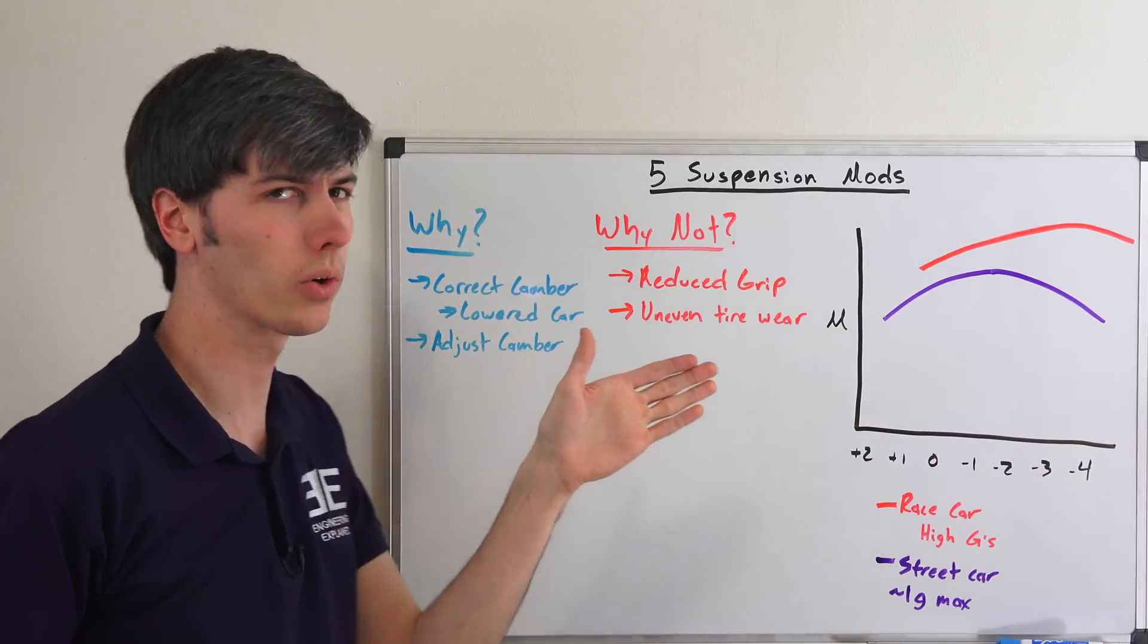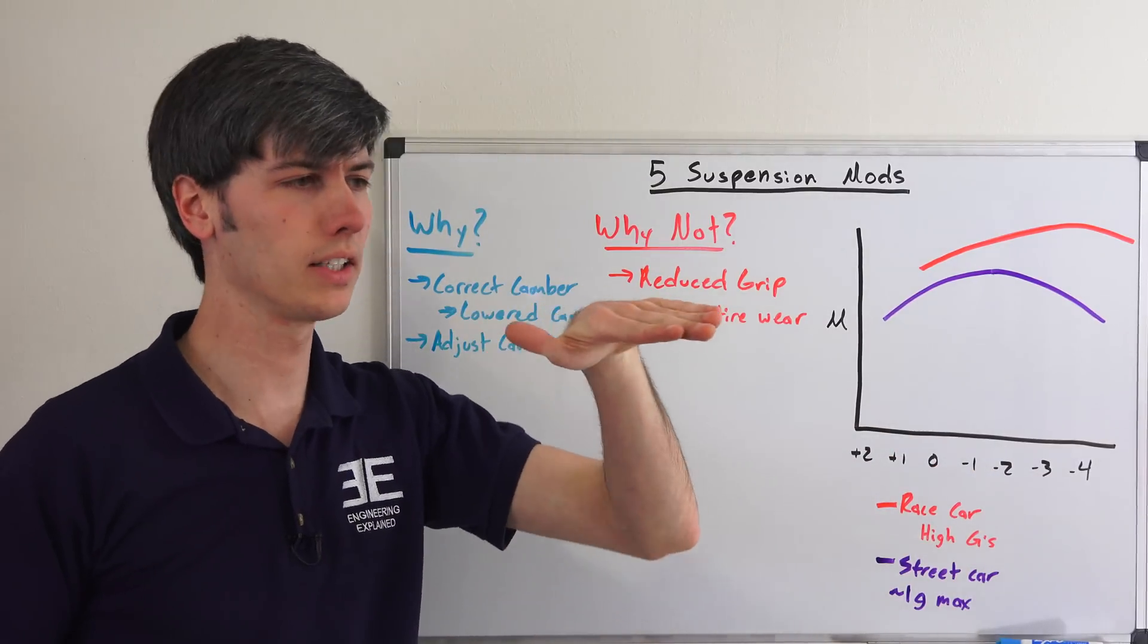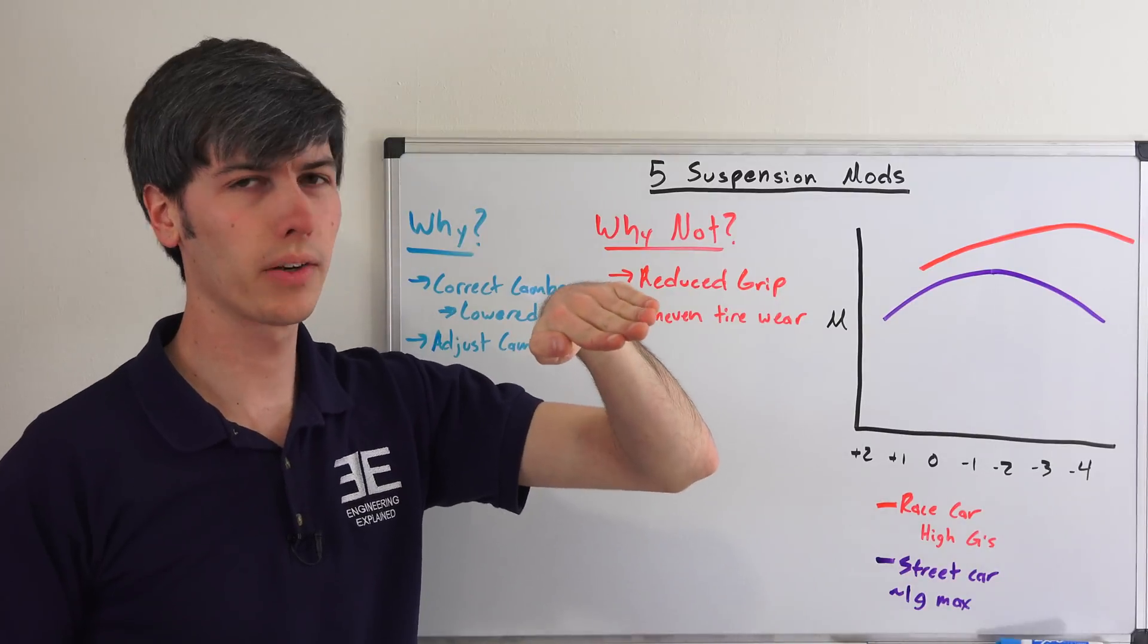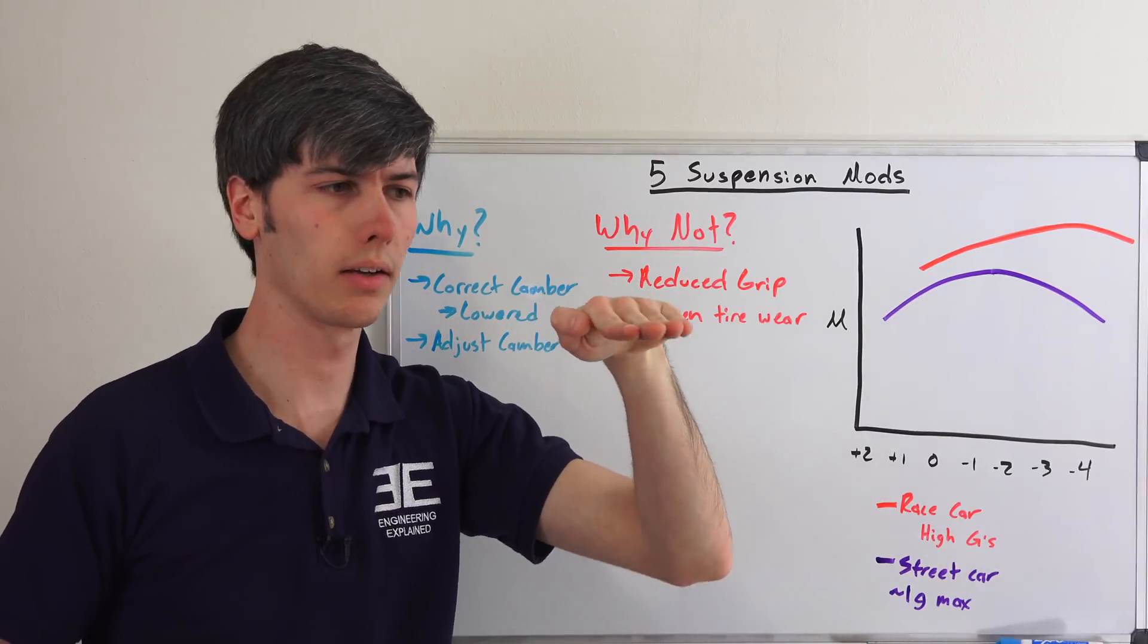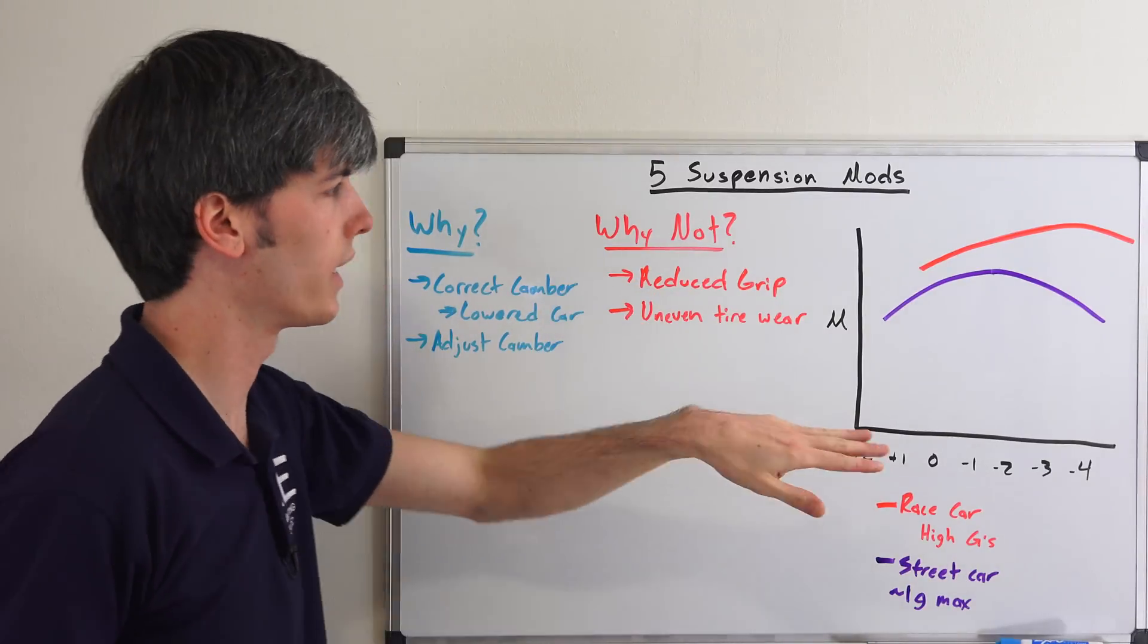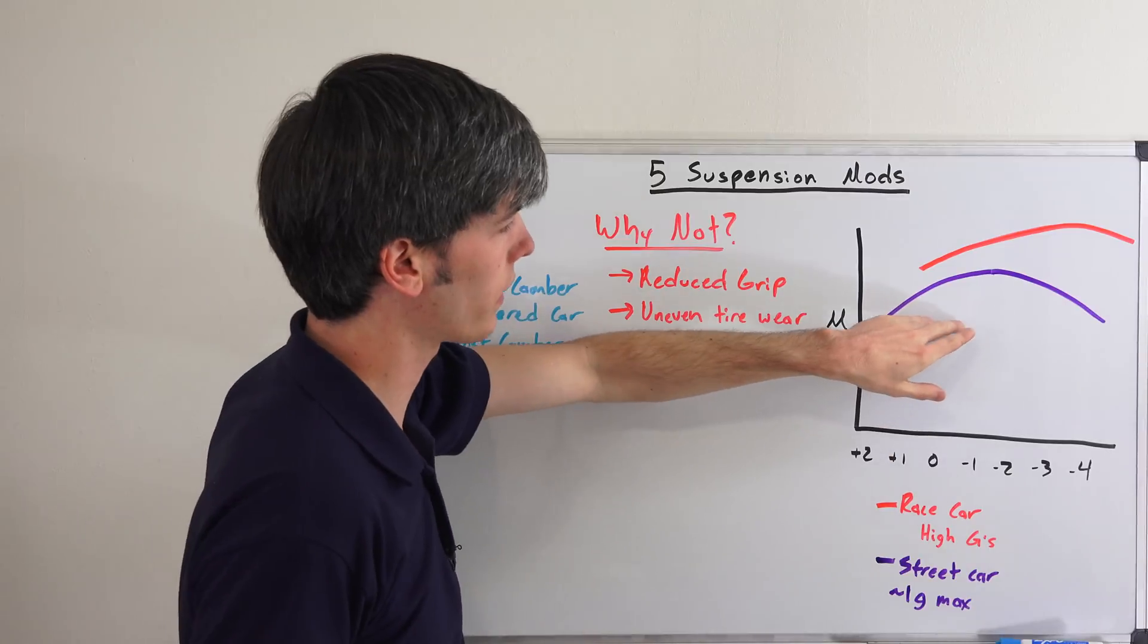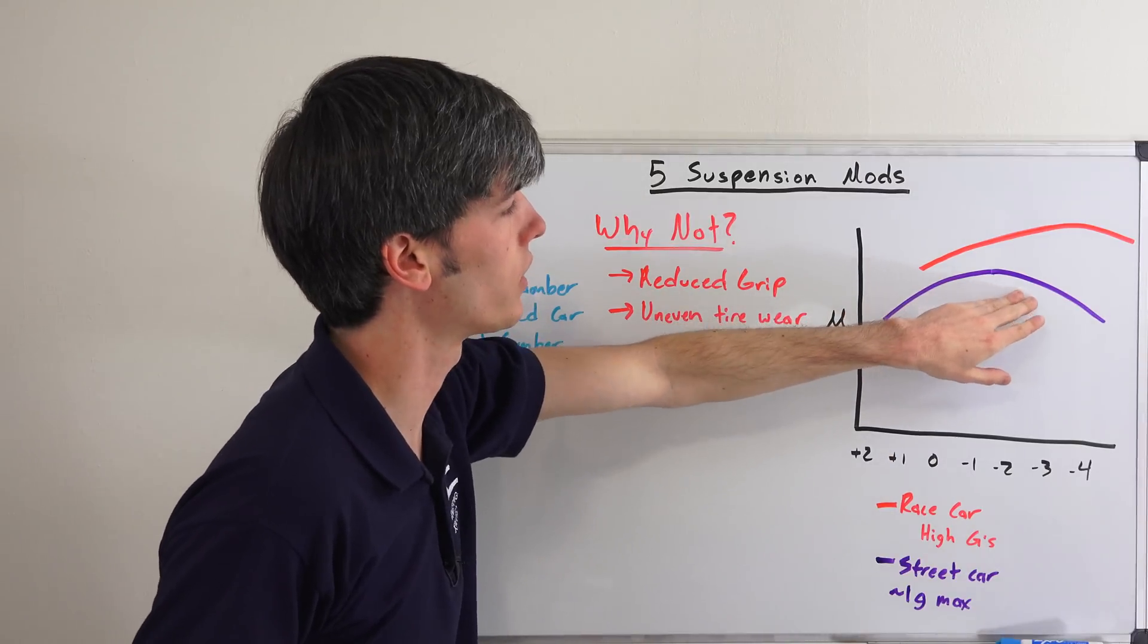As you're cornering, the car is going to lean into that tire. A little bit of negative camber is helpful because it maximizes the contact patch in a corner. With a road car, that's going to peak somewhere around negative 1 to negative 2.